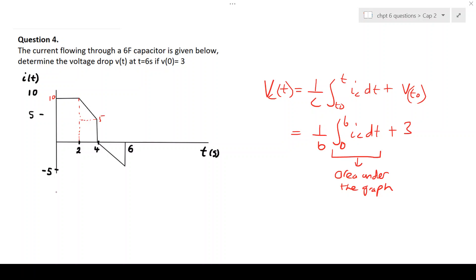So we'll say that the area is going to give us 10 times 2, plus 4 minus 2 will be 2, times 5.